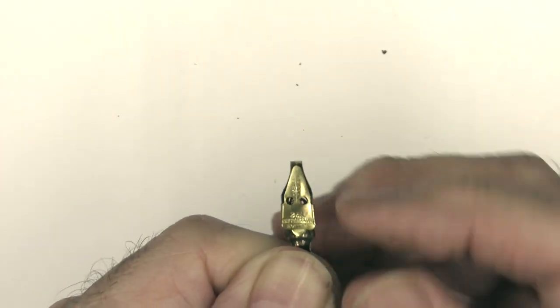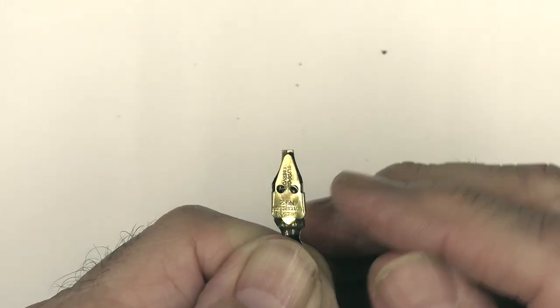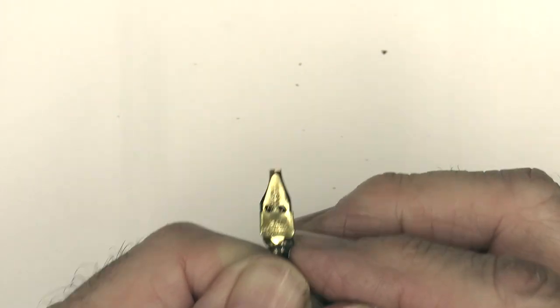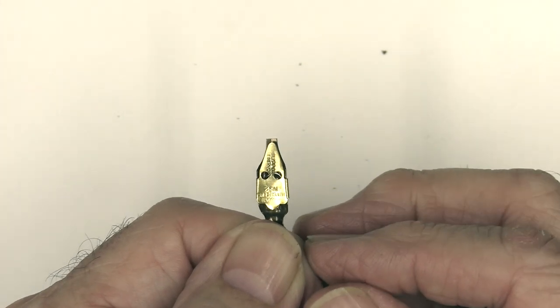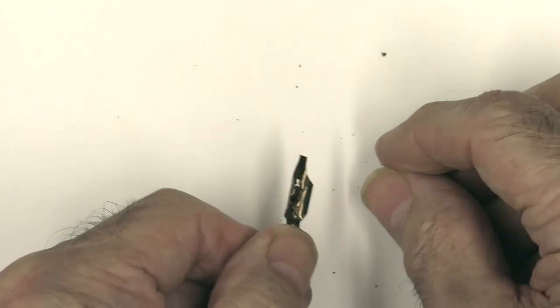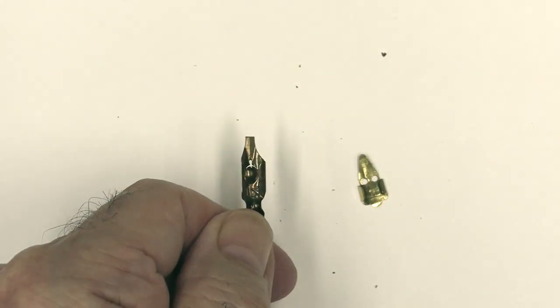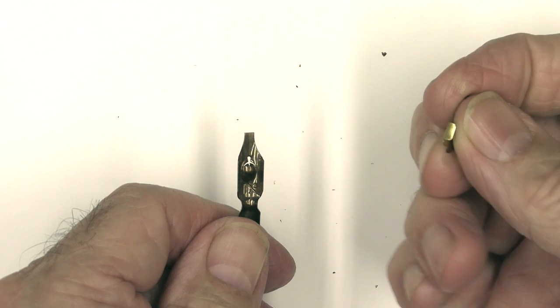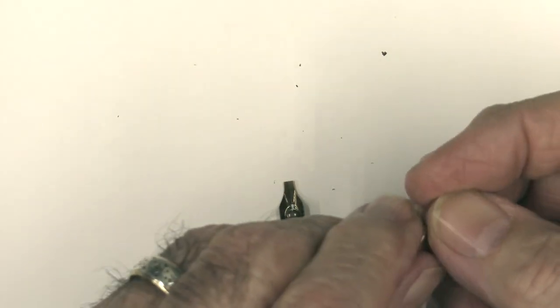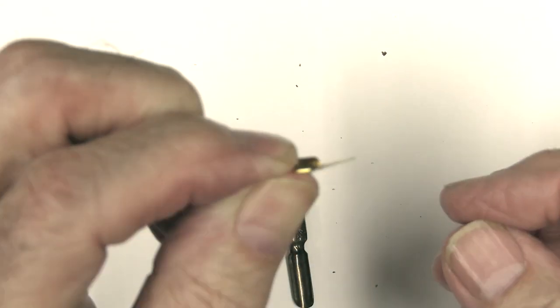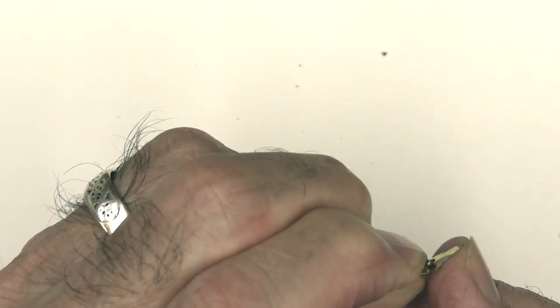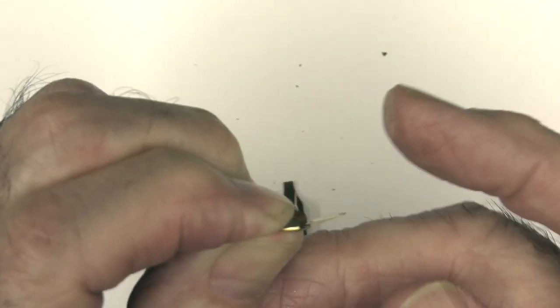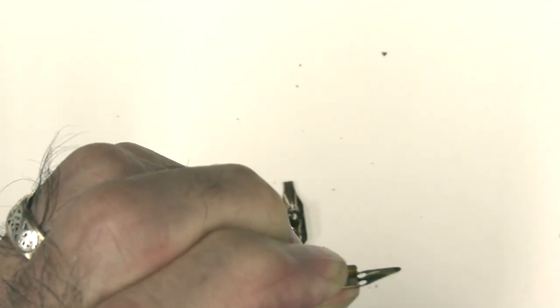Now, the thing about this Mitchell nib is the reservoir for it does not come with the nib. The Tape nib, the Brause nib, the reservoirs came attached to the nibs. The Mitchell nib comes with a reservoir that's not attached. Often you have to buy the reservoirs separately. The thing about these reservoirs too with the Mitchell nibs is that they're very flexible and they're made to be flexible so you can push this up or push it down to some degree.